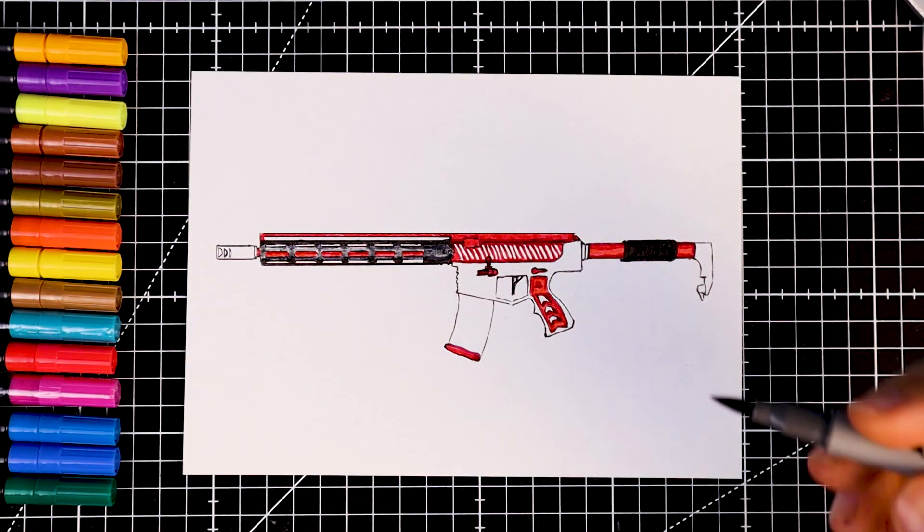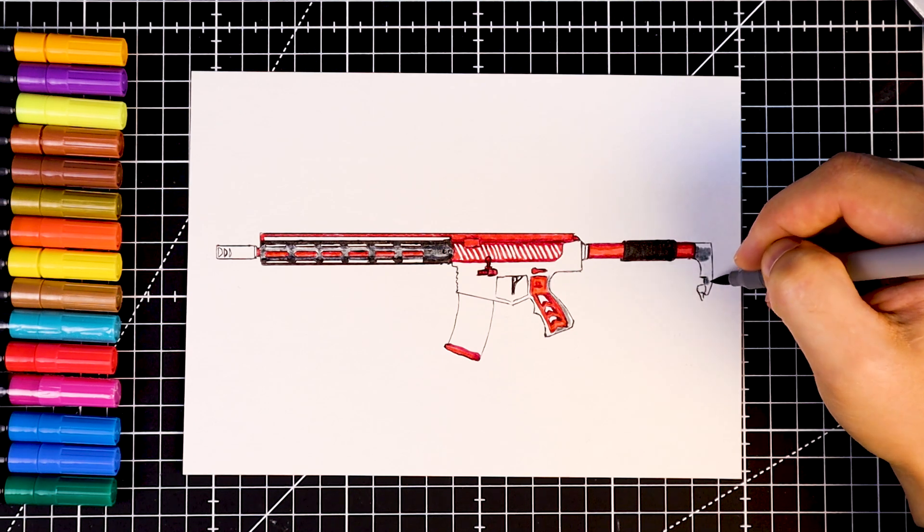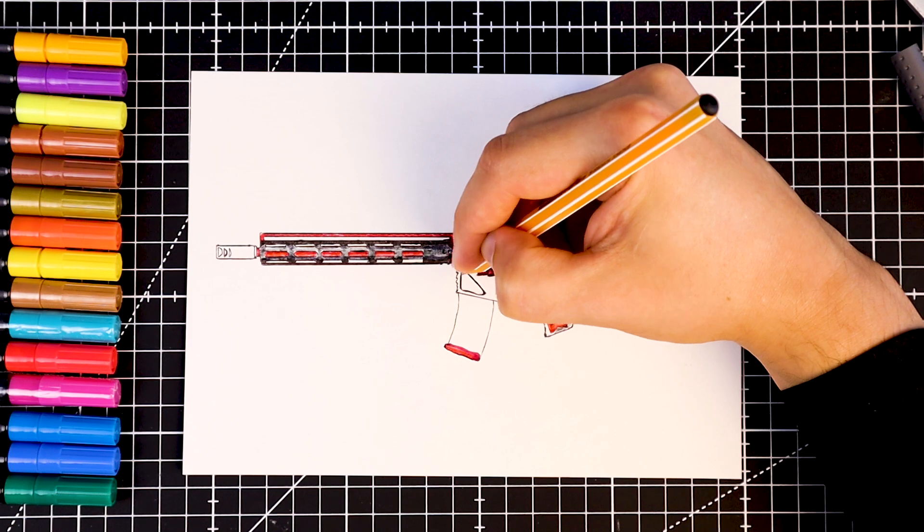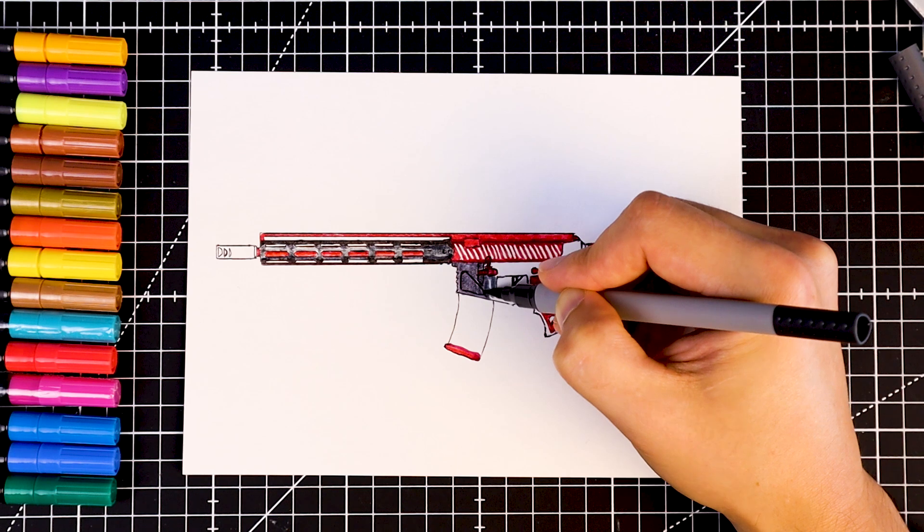Now take a light grey marker and fill in the areas that will be shiny. Later we can add more shine with a white gel pen. Now use a darker grey marker to fill in the remaining areas.